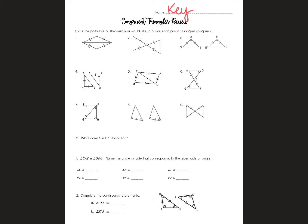For this first section, you're just stating the postulate or theorem you would use to prove that the triangles are congruent. Just in case you forget, your choices are SSS (side-side-side), SAS (side-angle-side), ASA (angle-side-angle), AAS (angle-angle-side), or HL. On this first one, you don't have enough marks, but you could mark this middle side that they share, and that makes it marked with three sides — so that's SSS.